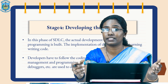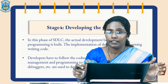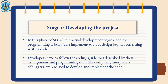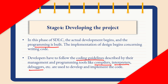The next stage is developing the project. This is the stage where the actual development begins and the programming is built. The implementation of design begins concerning writing code. Here, the developers have to strictly follow the coding guidelines described by the management, and they have to use programming tools like compilers, interpreters, debuggers, etc., which are used to develop and implement the code.